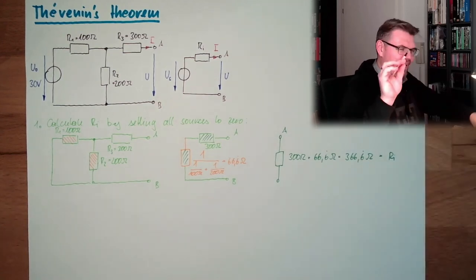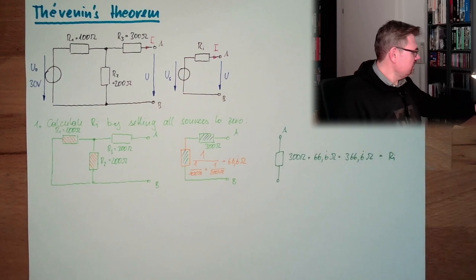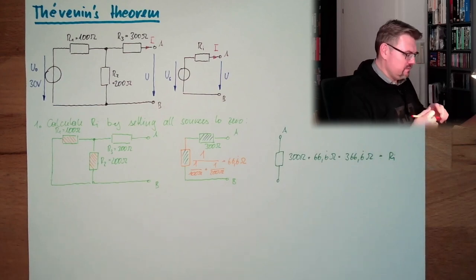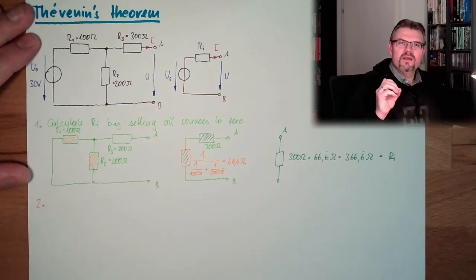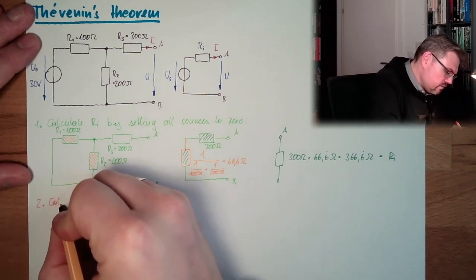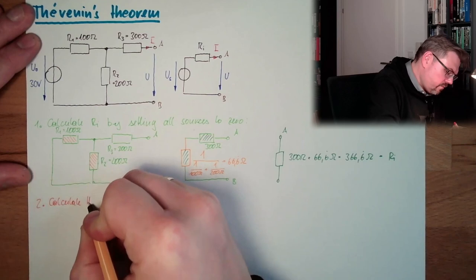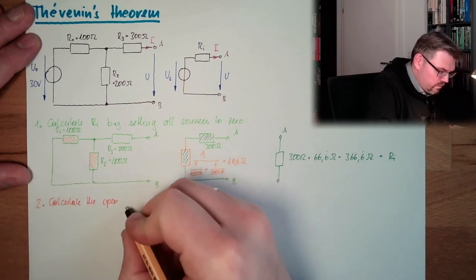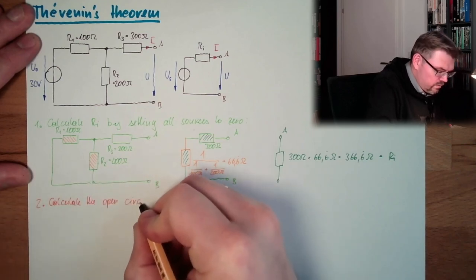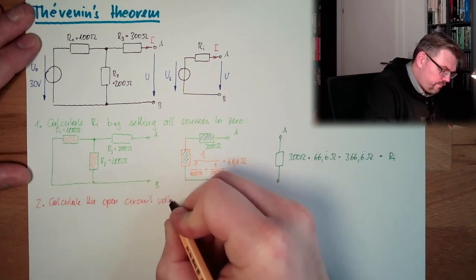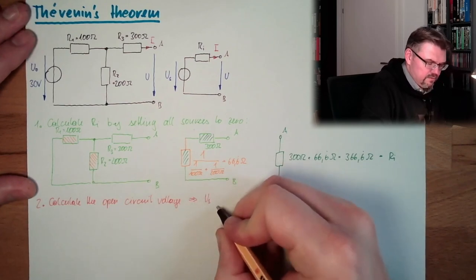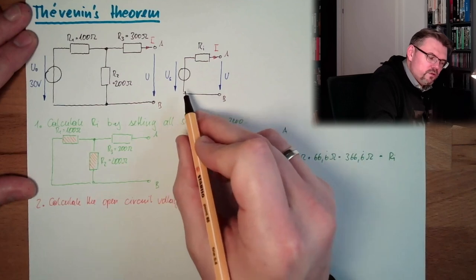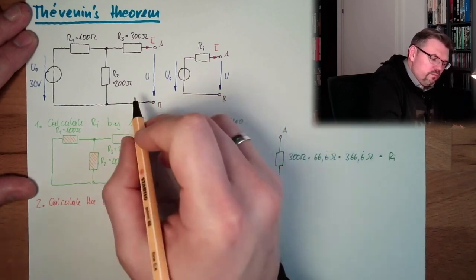Second step: calculate the no-load voltage — the open circuit voltage. This is then US, because the open circuit voltage is US.